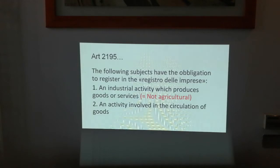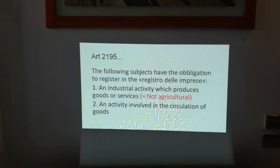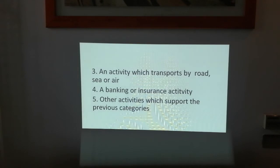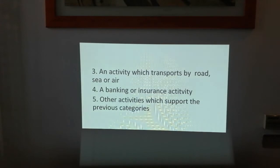The second category under Article 2195 is an activity involved in the circulation of goods — we can think of shops or representatives that sell and distribute products; these are commercial activities. The third category is an activity which transports by road, sea, or air — any transportation services, postal services, or services which ship goods can be a commercial activity.